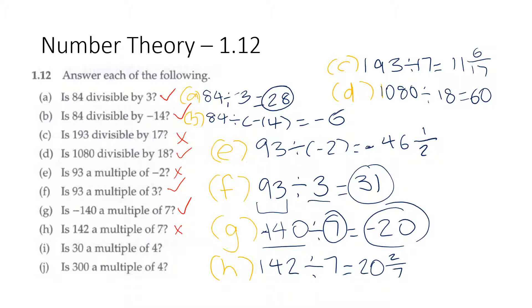Part i: is 30 a multiple of 4? 30 divided by 4 is equal to 7 and one half, which we know is not an integer. So 30 is not a multiple of 4.